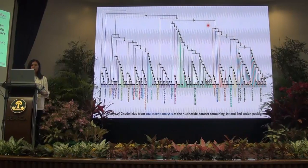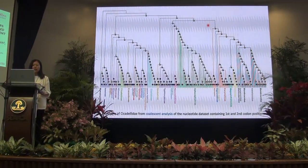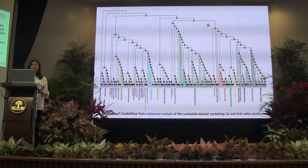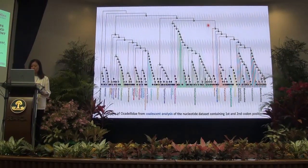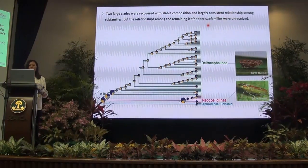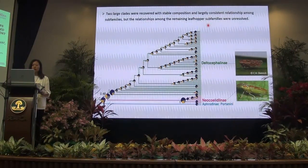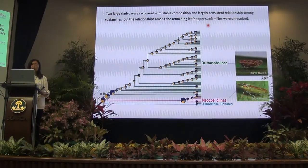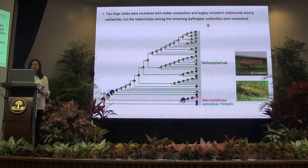Here is the result from the coalescent analysis. Generally speaking, branch support is relatively lower than in the maximum likelihood analysis. This makes sense because we have many genes with very short alignments, so gene trees often have very low bootstrap support values. Among these three topologies, most relationships among some subfamilies are unstable, meaning they are unresolved. However, we do recover two large clades that are stable across analyses, and the relationships within these two clades are largely consistent.